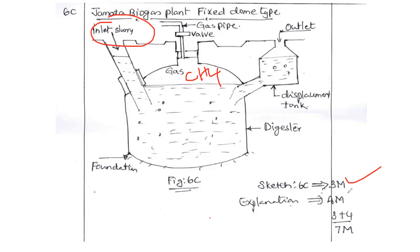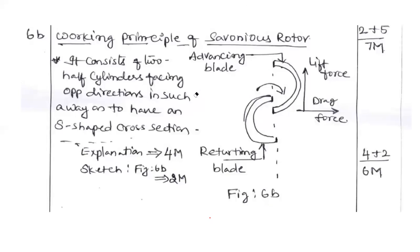Here methane gas will be generated. CH4. Then foundation - civil work will be carried out in this bottom side. Sketch has the weightage of three marks, explanation carries the weightage of four marks. How the gas will be generated - the mixing of slurry one is to one. For one liter water, one liter cow dung like that, or animal manure. In this fashion you can proceed for writing the answer for question number 6c. I think it's clear to everybody.